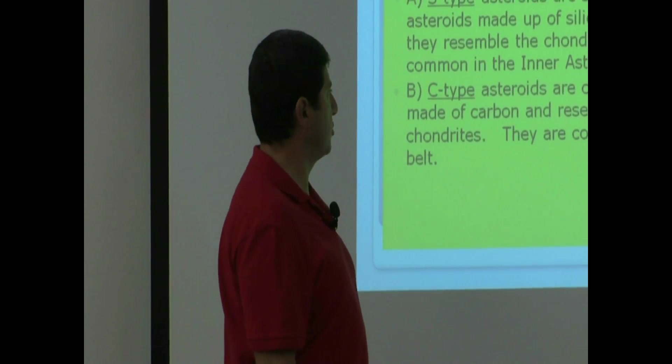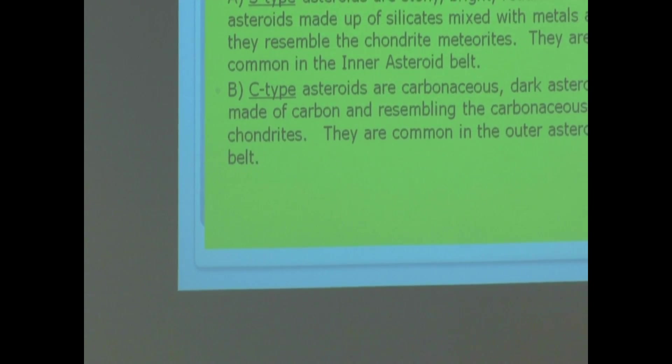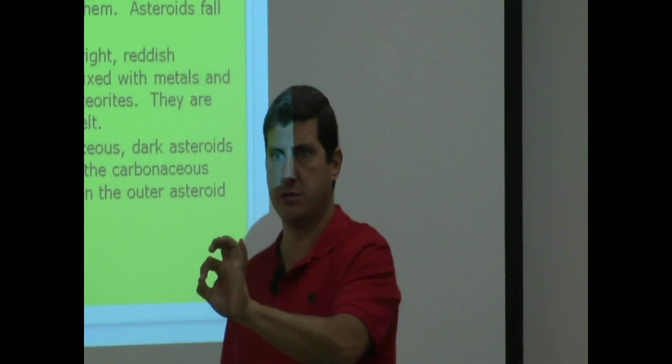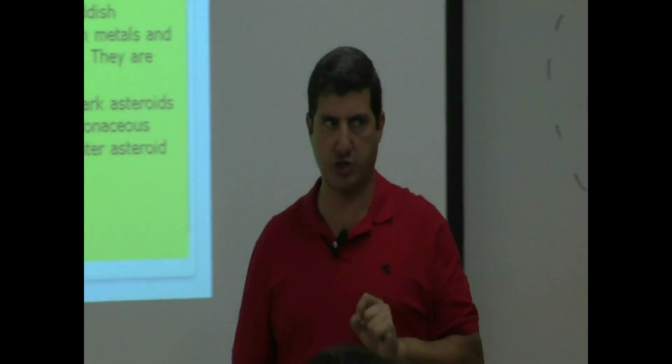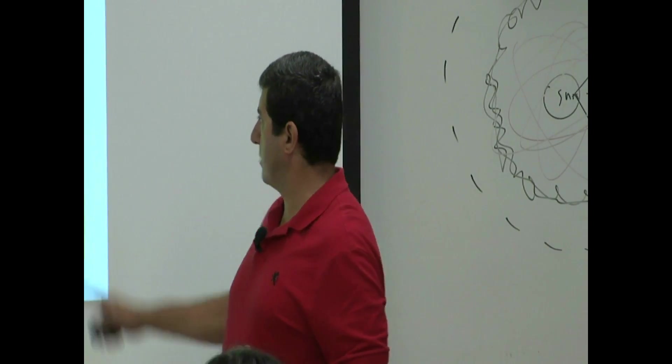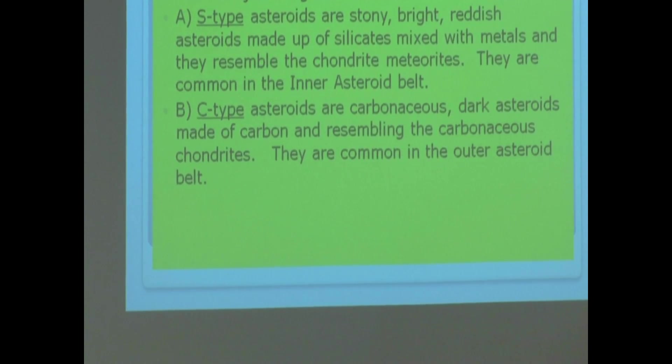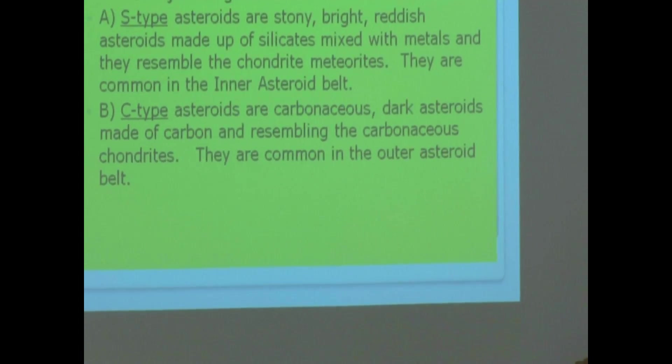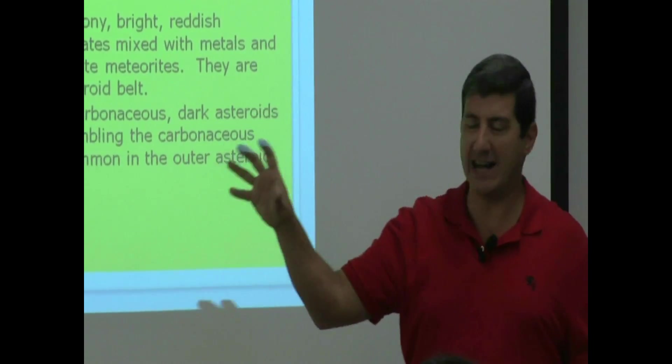C-type asteroids are carbonaceous. That means they have carbon. Dark asteroids. So, they're made up of dark. Think about your pencil. Your pencil is a dark pencil. It's made up of carbon. That's the carbonaceous asteroids. Made up of carbon. And resembling the carbonaceous chondrites, those are another kind of meteorites. They are common in the outer asteroid belt. So, you've got S is in the inner. You've got C, the carbonaceous in the outer.